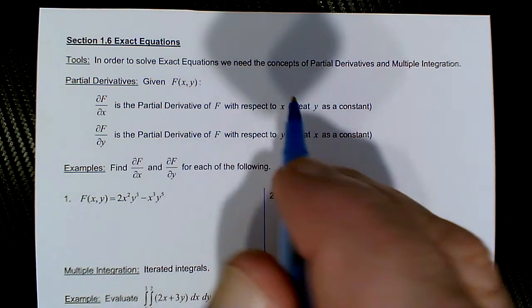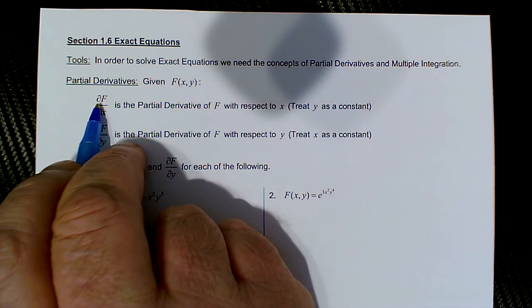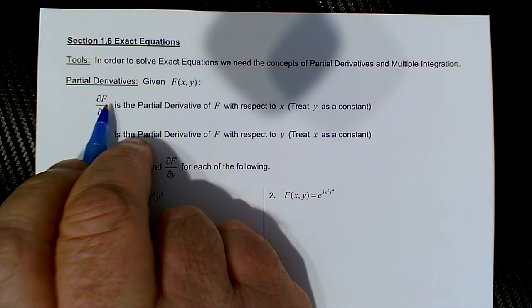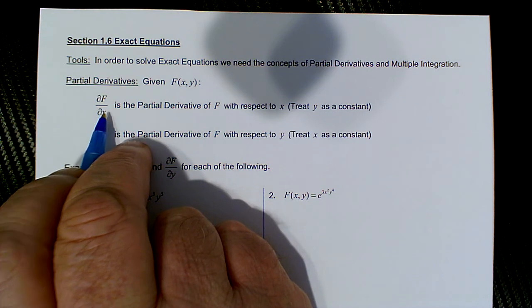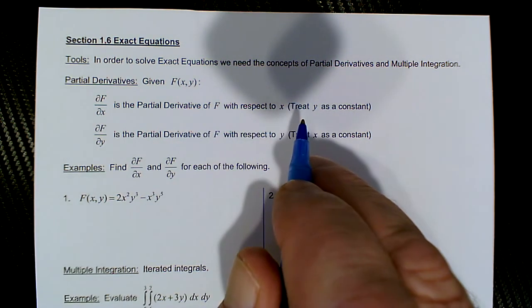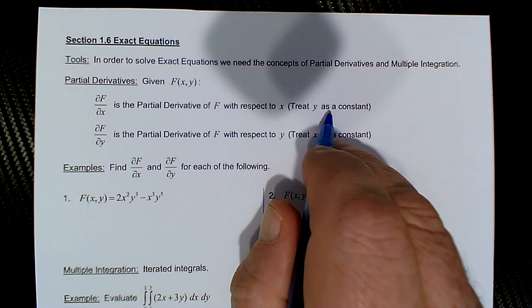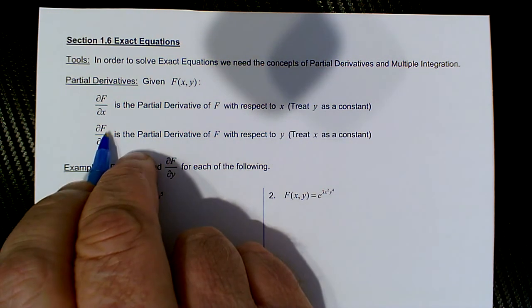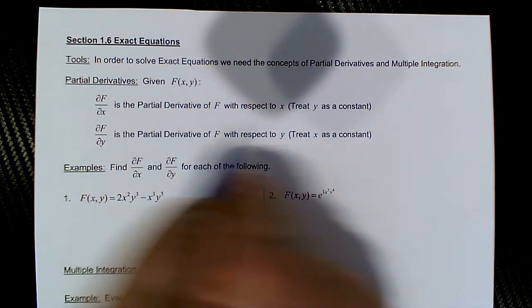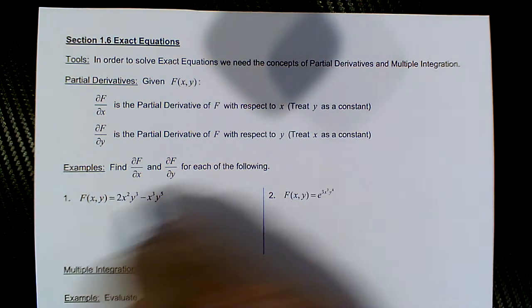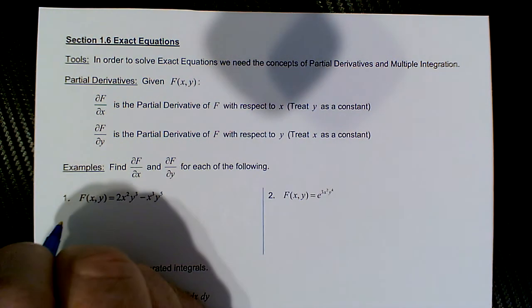we use the notation — this is not a delta symbol — so the partial of the function f with respect to x is found by treating y as a constant. And if we want the partial of the function with respect to y, we're going to treat x as a constant. So here are a few examples and we want to find the two partials.